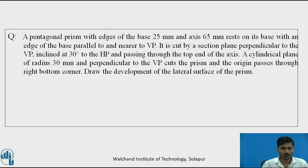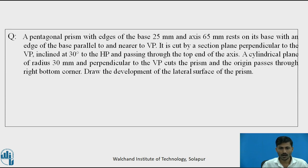So this is the question. A pentagonal prism with edges of the base 25 mm and axis 65 mm rests on one of its base edges with an edge of the base parallel to and nearer to the VP. It is cut by a section plane perpendicular to the VP, inclined at 30 degrees to the HP, and passing through the top end of the axis. A cylindrical plane of radius 30 mm and perpendicular to the VP cuts the prism, with the origin passing through the right bottom corner of the prism. Draw the development of the lateral surface of the prism.